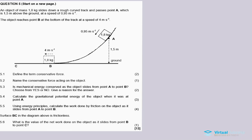So the object at point A has a certain speed, and then because of gravity it gains more speed and reaches point B with an increased speed of four meters per second.